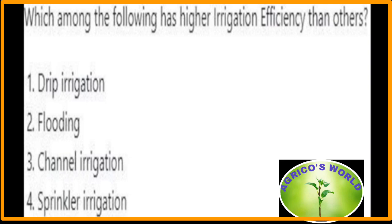Which among the following has higher irrigation efficiency than the others? Drip irrigation, also called trickle irrigation, was introduced from Israel. The water use efficiency of drip irrigation is 95 to 100%, with a discharge rate of 1 to 8 litres per hour at a pressure of 1.5 to 2.5 kg per cm². Drip irrigation is suitable for widely spaced crops, orchard trees, and in greenhouses. The water use efficiency of sprinkler irrigation is 80 to 85%, and that of flood irrigation is 60 to 70%.